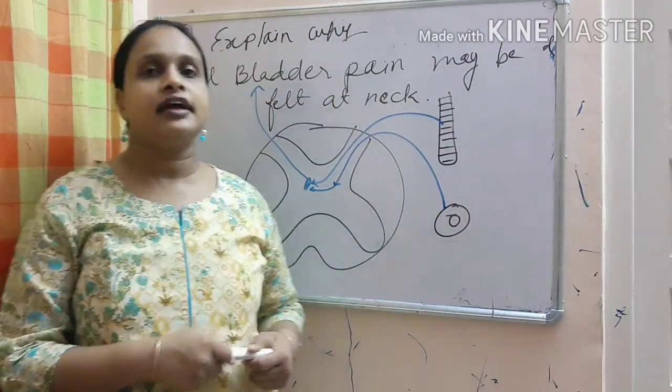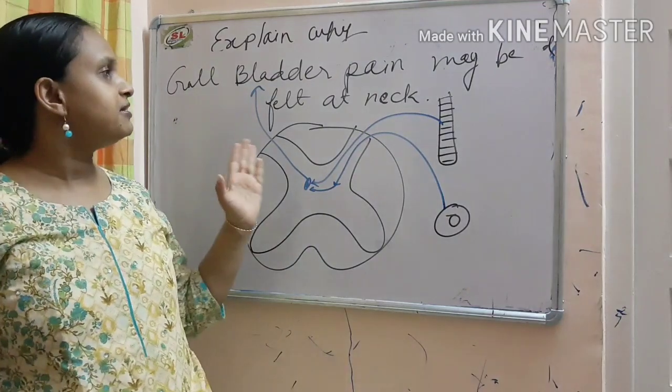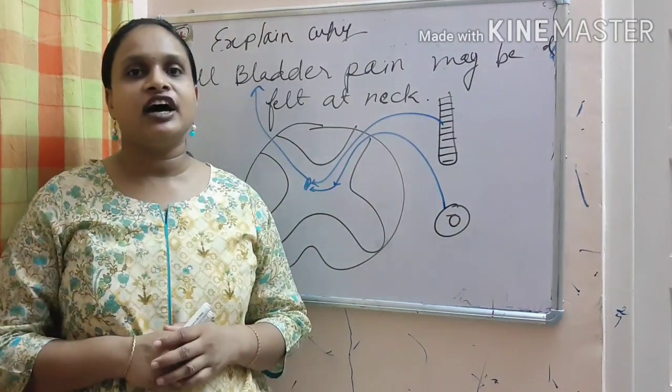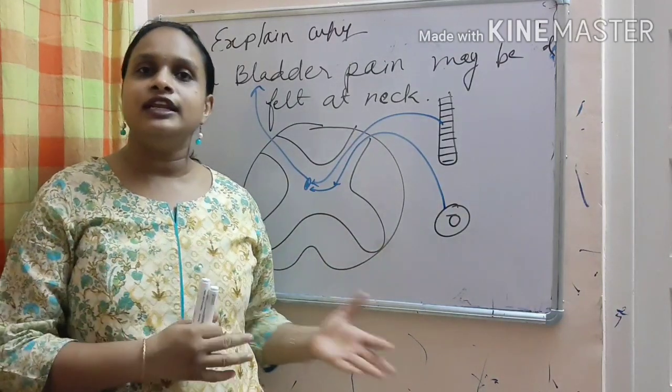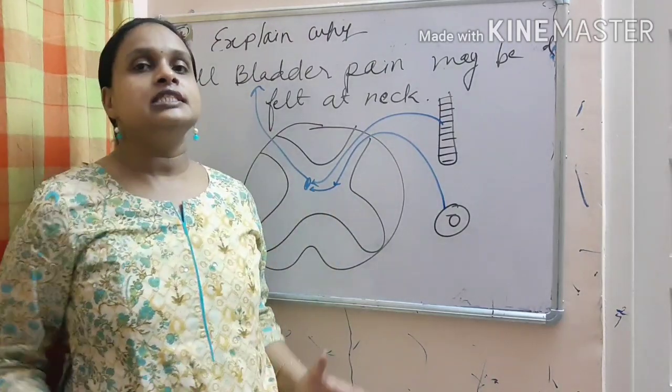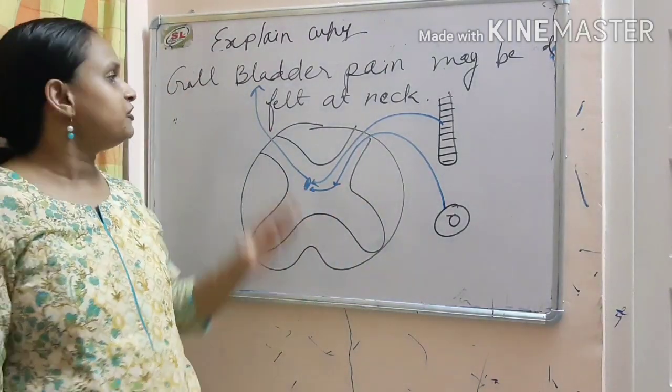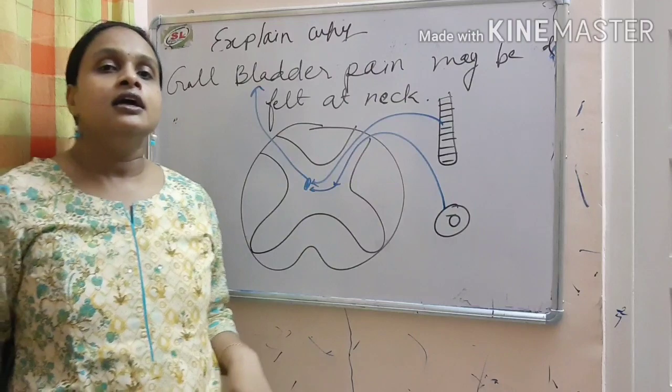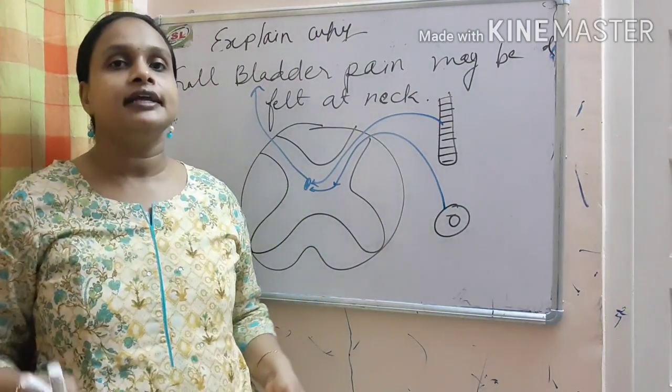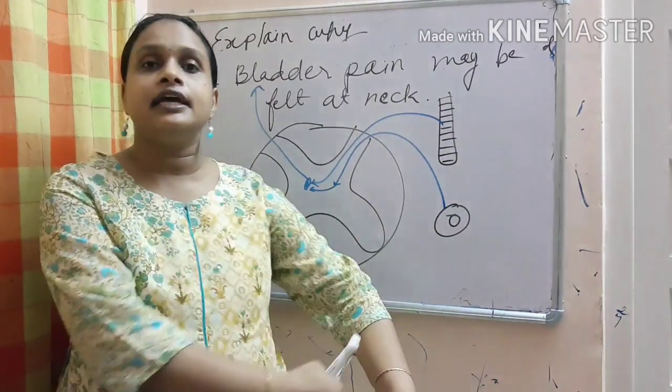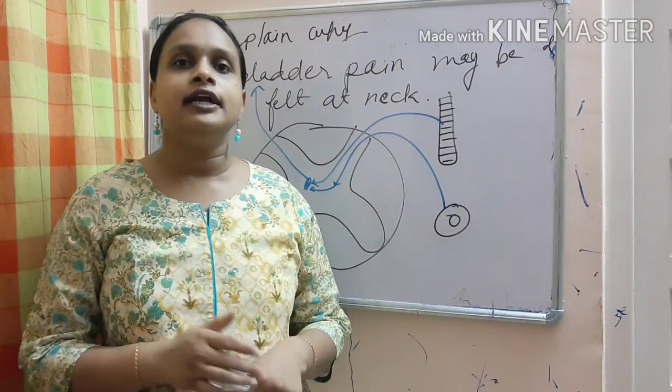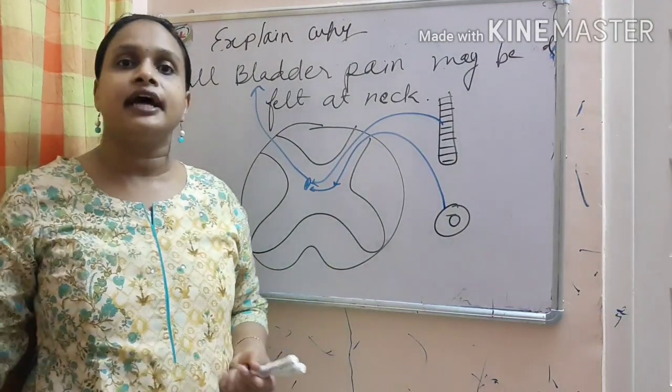Question is explain why gallbladder pain maybe felt at neck. There was one what will happen question, what will happen to the left arm when there is myocardial infarction. Same thing, same principle, same theory would be applied here. It is due to referred pain. In MI, myocardial infarction or heart attack, the pain is referred to the inner aspect of the left arm or to the jaw or to the shoulder tip and sometimes it is referred to the right arm also.